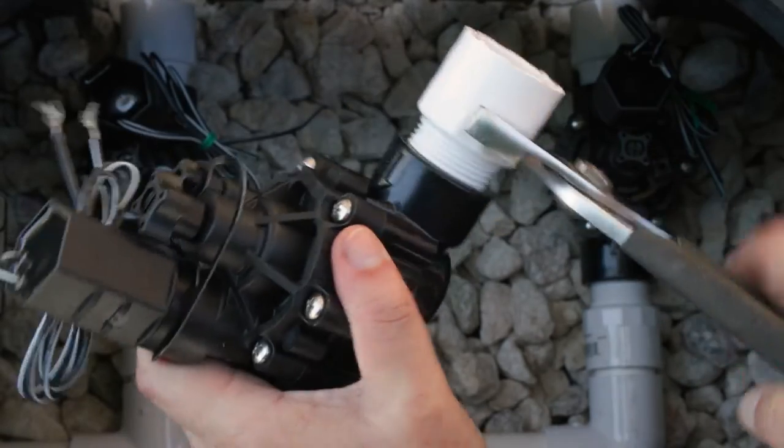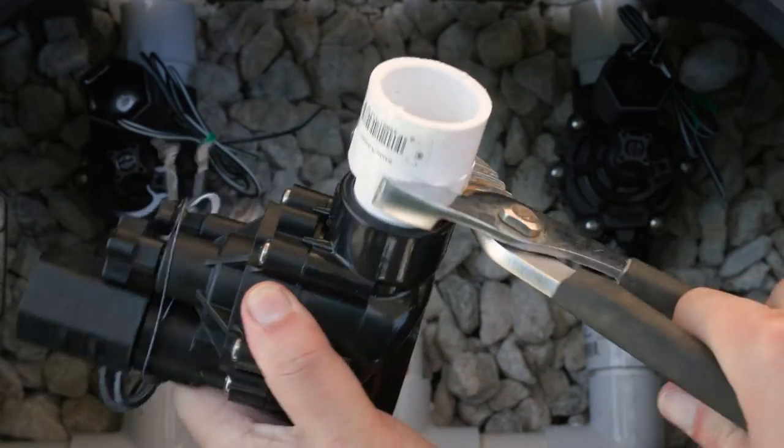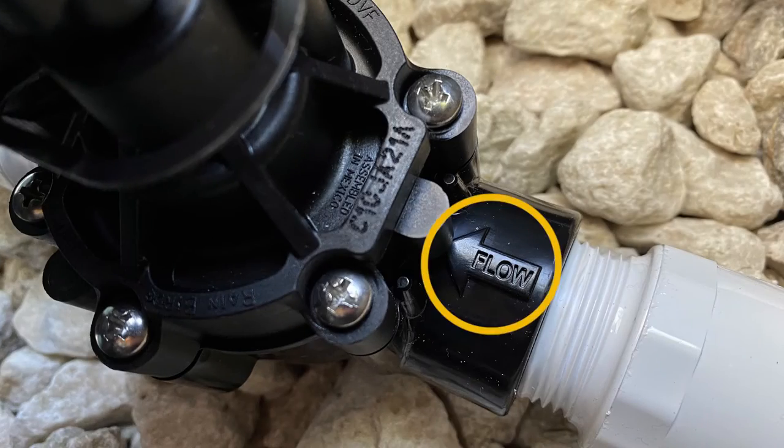Tighten the fittings with pliers or channel locks, but be careful not to over tighten them. Ensure that the valve arrows are pointing in the direction of the water flow.